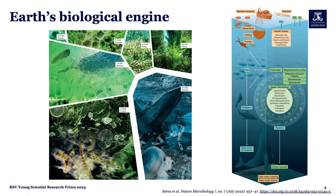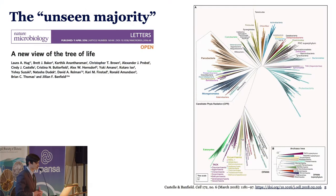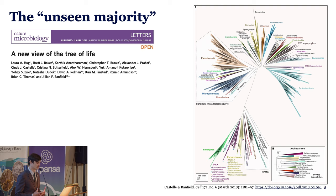As climate change accelerates, understanding how picoplankton communities are being affected is critical to predicting broader changes in marine ecosystems and global biogeochemical cycles. While we often think of life in terms of plants and animals, the vast majority of life on earth is microbial. Much of this microbial diversity remains uncultivated — we call these the 'unseen majority,' microbes we can't grow in a lab but that are thriving in every corner of the planet, particularly in the ocean.